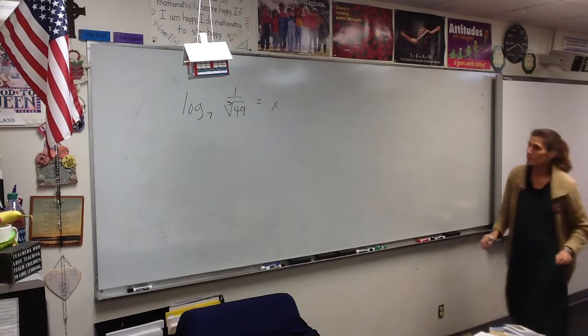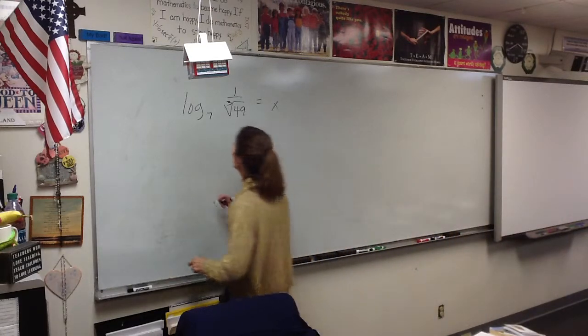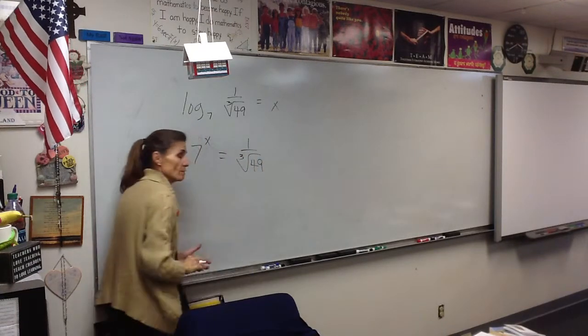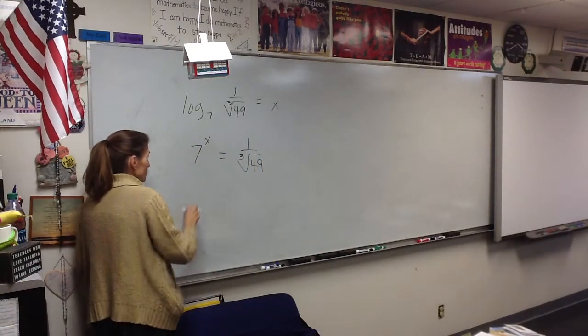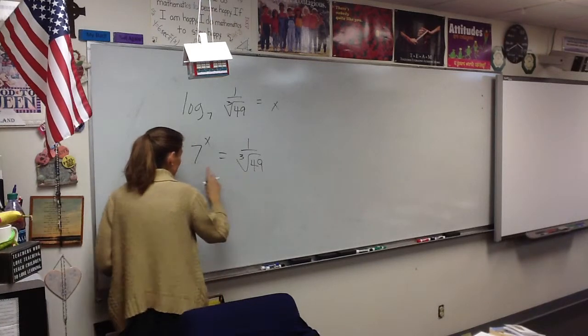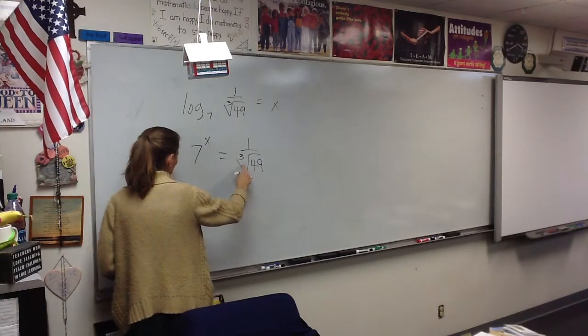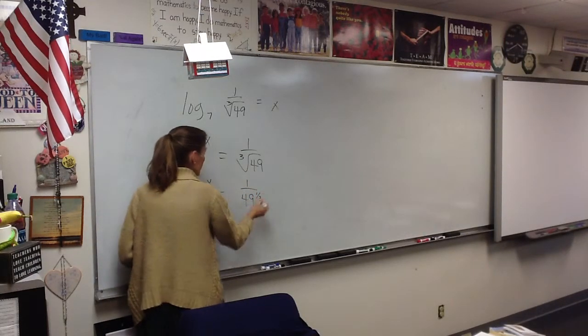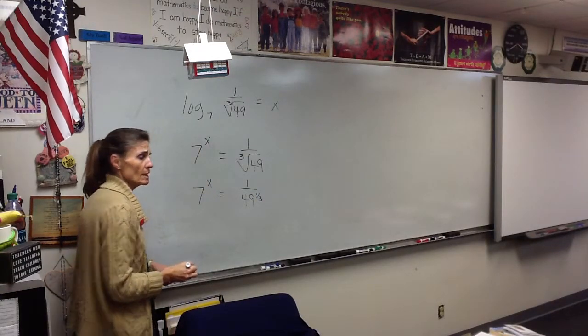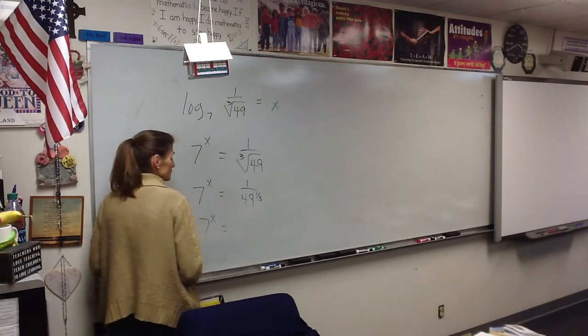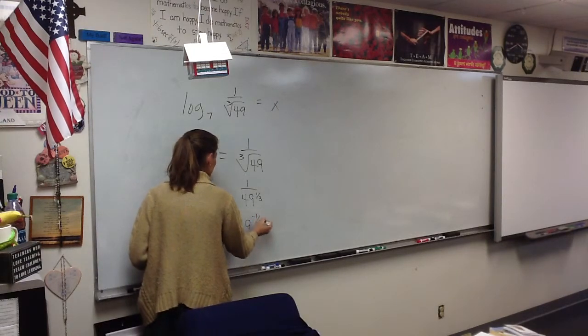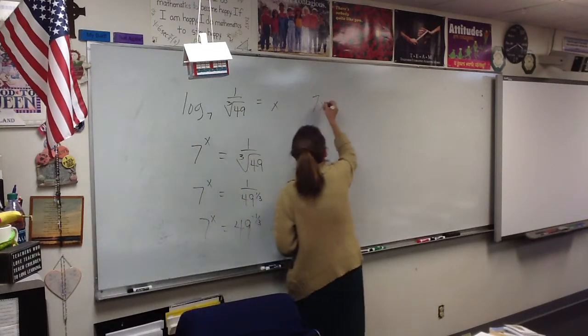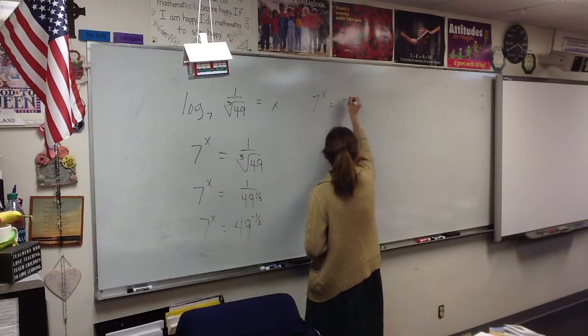One strategy would be to rewrite this as an exponent. I'm not allowed to use a calculator, so I'd better be able to get a common base. What do you know about a radical? It's a fractional exponent. And what do you know about 1 over? It's a negative exponent. And what do we know about 49? It's 7 squared.